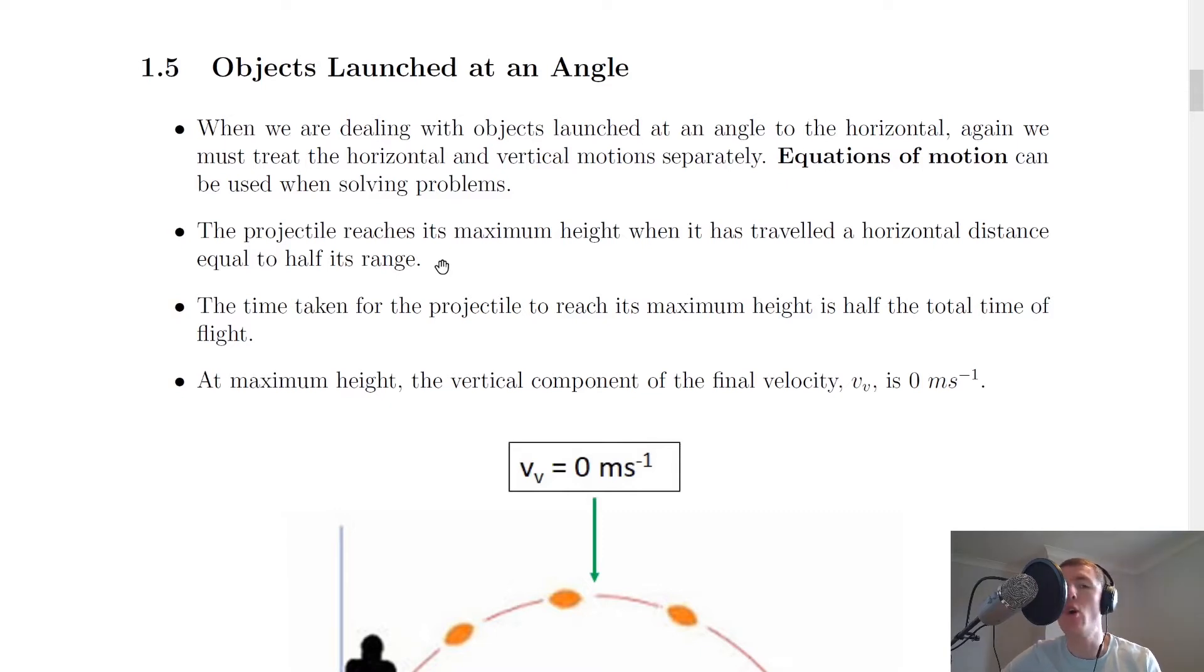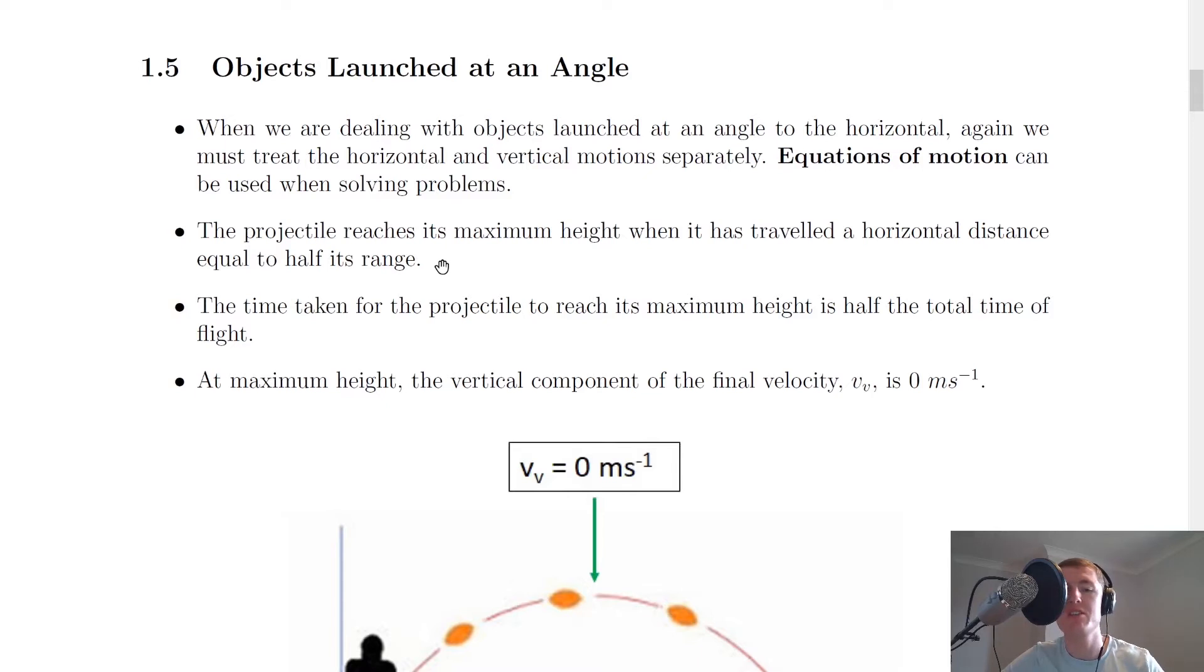So what do we mean by objects launched at an angle? Well I'll just show you a quick animation to help you visualize this. So imagine you've got a cannon launching a cannonball at 50 meters per second at an angle of 45 degrees to the horizontal. So there's the horizontal and the cannonball will be launched at an angle of 45 degrees with respect to that at 50 meters per second.